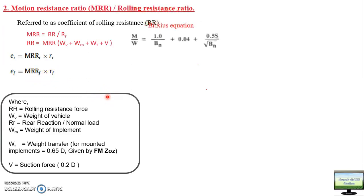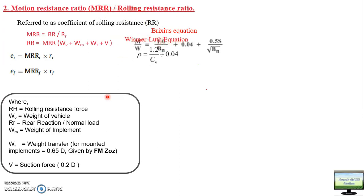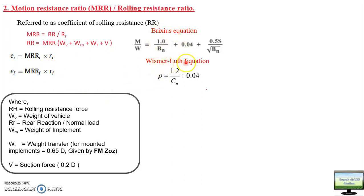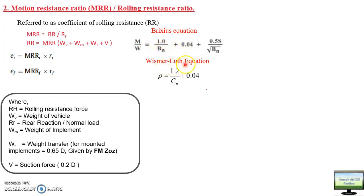To measure rolling resistance there are two approaches: the Brixius equation and the Wismar-Lutz equation. Brixius and Wismar-Lutz were scientists who worked on calculating traction, efficiency, motion resistance, and coefficient of traction. Brixius considered the mobility number (BN) and slip — BN includes many parameters. Wismar-Lutz considered only CN (cone index number). You don't need to remember the Brixius equation since examinations don't ask questions on it, but questions from the Wismar-Lutz equation are asked regularly.